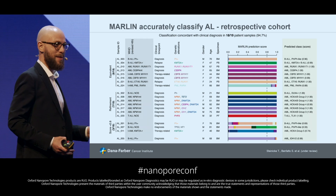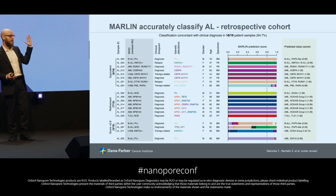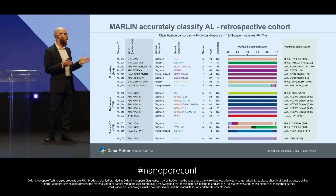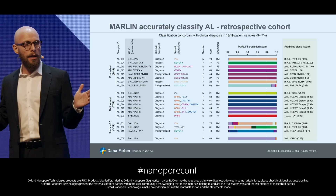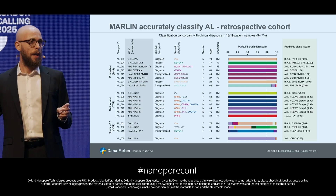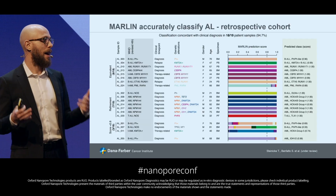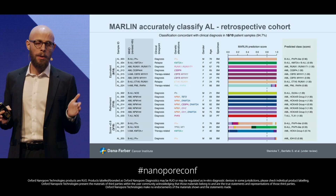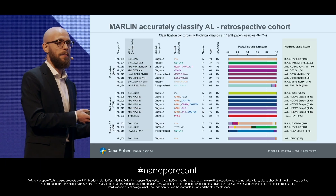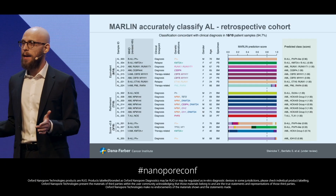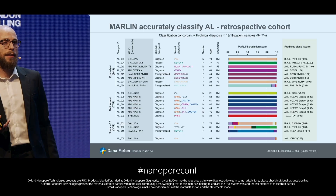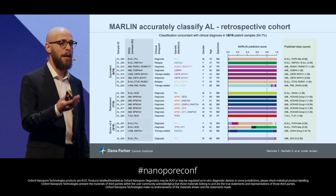Here are the results of MARLIN — I know it's a busy slide, but I'll guide you through. Each row is a sample; the first column shows the sample ID, then the initial diagnosis according to the WHO, then genetic alterations present in the samples. In the colored bars you see the scores from MARLIN, and we report the methylation class with the highest score. The main message is that in 95% of cases, we got a methylation class prediction concordant with the initial diagnosis. Even more, in seven cases we were able to refine the classification.